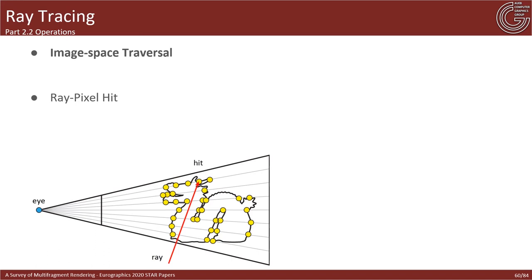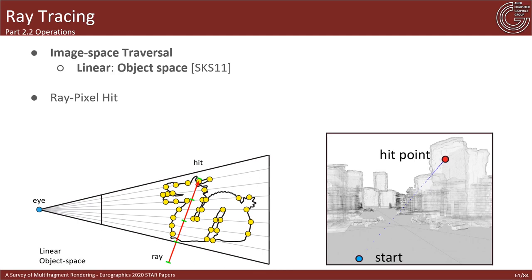Image-space traversal is a critical part of image-space ray tracing. It involves accessing fragment lists at different and arbitrary pixel locations, allowing propagation of rays within a visual environment. This has been widely used in single-layer techniques originally, with the most simple and efficient being object-space linear ray marching, where each ray is sampled at fixed object-space locations and tested against depth values for intersections. This approach performs efficiently but suffers from under- and oversampling issues.